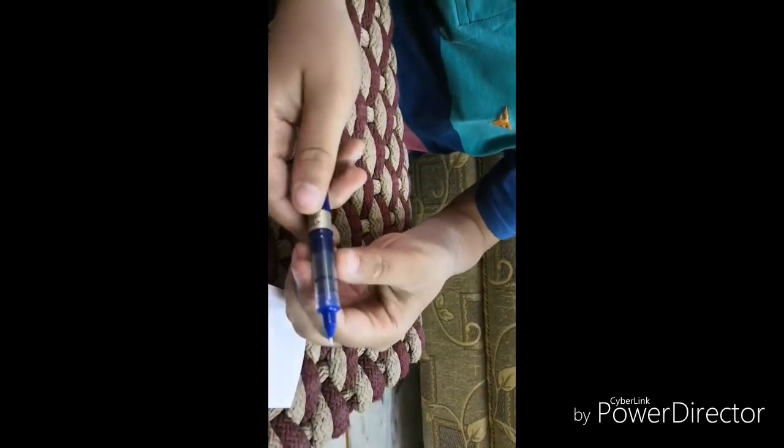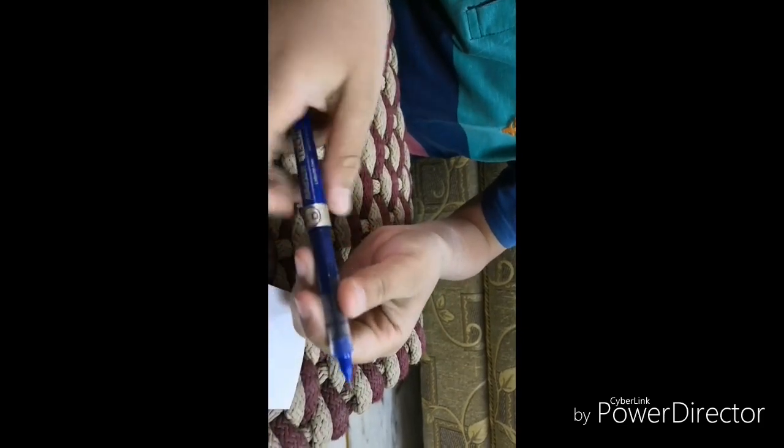So now to the pen. There is no grip. In every roller pen we don't get a grip like Trimax also. So now to the refill. On the refill also it's written Hauser Germany Tech 7 liquiding refill.